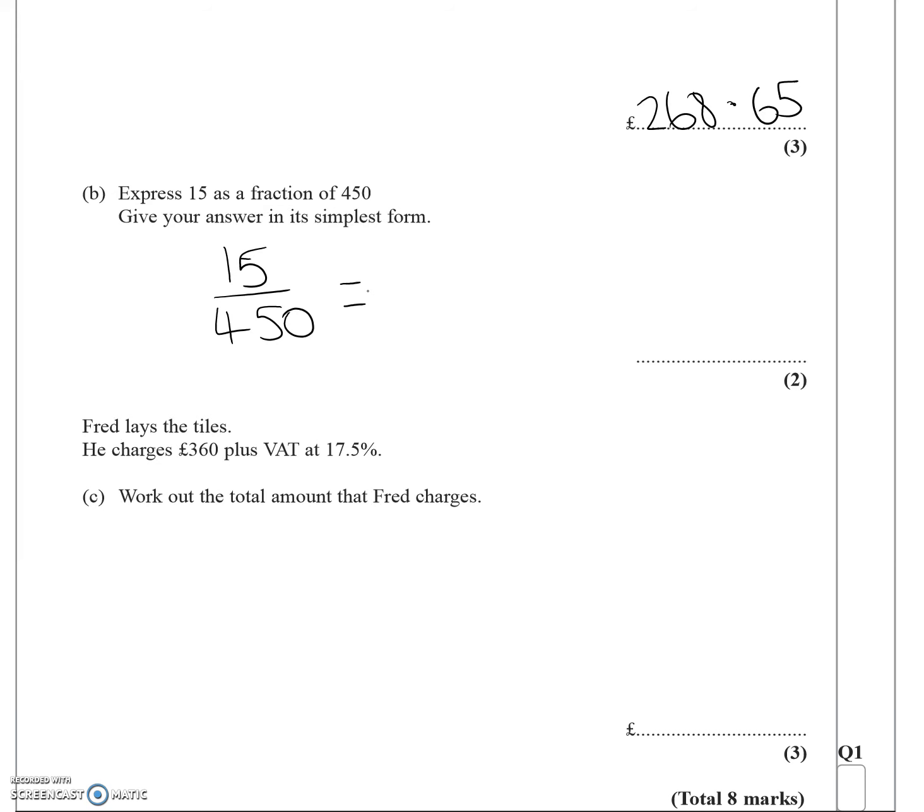So 15 divided by 5 is 3, and 450 divided by 5 is 90. Now you can see they both divide by 3, so it's 1 over 30. That's 1 thirtieth.